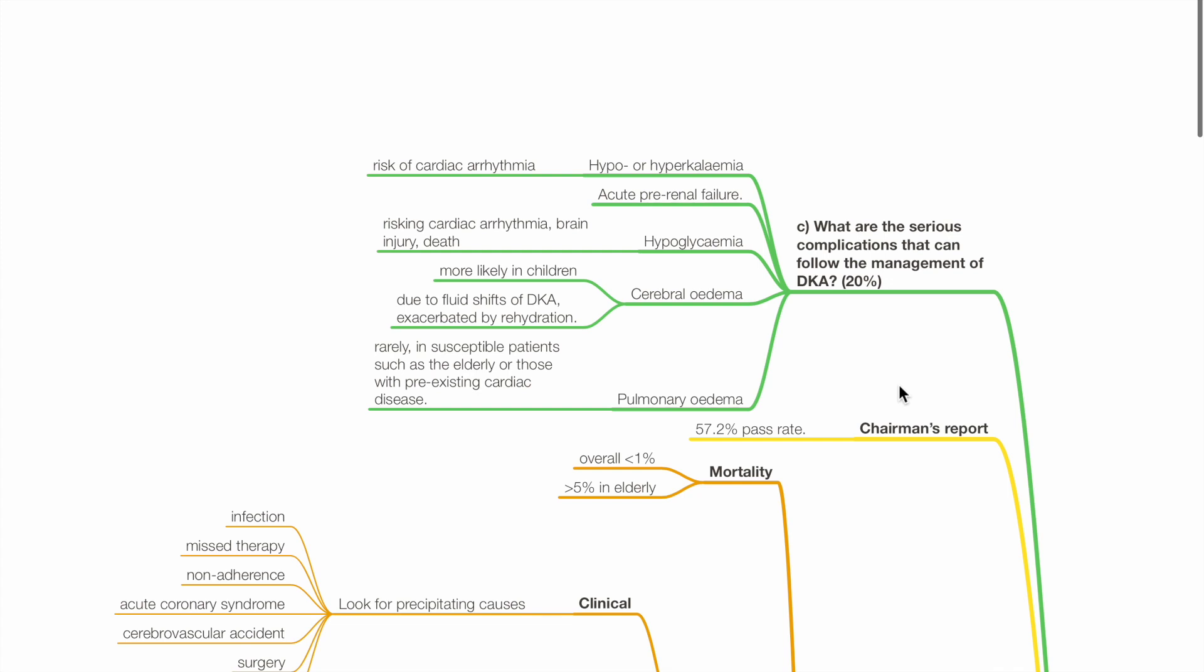Part C: What are the serious complications that can follow the management of DKA? This includes hypo or hyperkalemia which may lead to arrhythmia, AKI, hypoglycemia risking arrhythmias, brain injury and death. Cerebral edema, more likely in children. Cerebral edema is due to fluid shifts of DKA which is exacerbated by rehydration. Pulmonary edema may occur rarely in susceptible patients such as elderly or those with pre-existing cardiac disease.